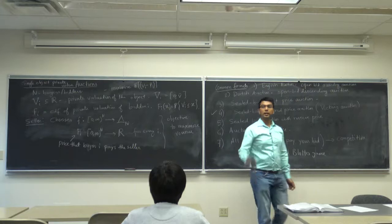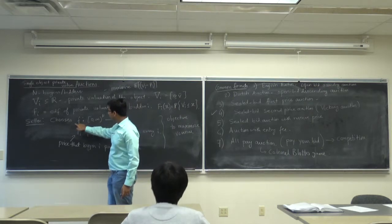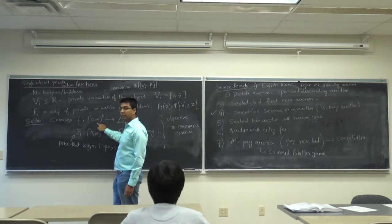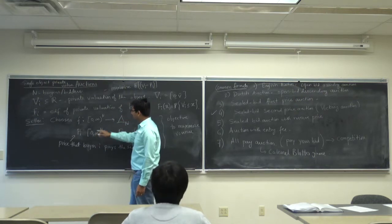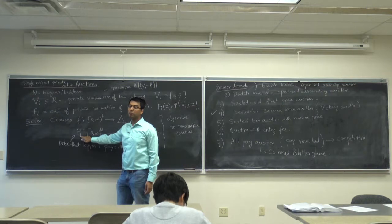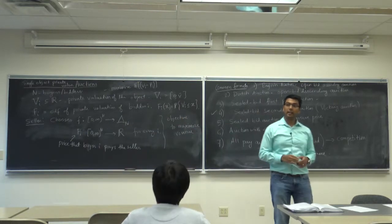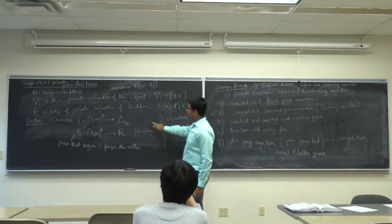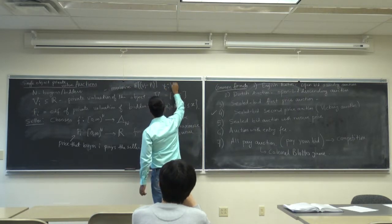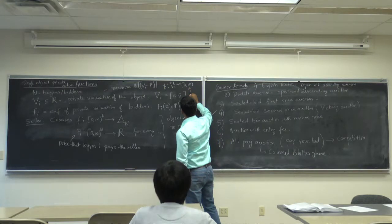The expected value buyers want to maximize depends on F, on Pi, on Fi — the distribution of private valuations of other bidders — and of course on each buyer's own private valuation. The strategy of buyer i is gamma_i which maps Vi to [0, infinity) — this is the bid space.